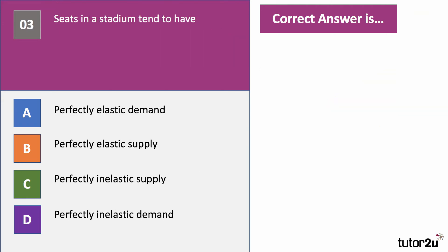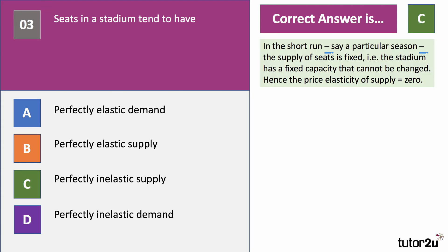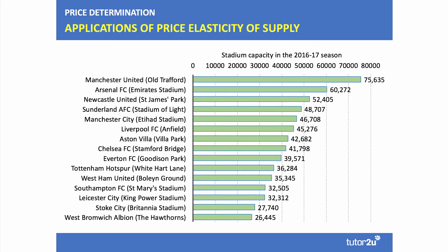Question three — I like this question. Seats in the stadium tend to have what? The correct answer is C: a perfectly inelastic supply. Consider a sports stadium — a football ground, for example. Take one particular season — essentially the capacity of the stadium is fixed, the supply of seats is fixed, can't be changed in any one season. Hence the price elasticity of supply is zero. Here's an example: stadium capacities for the English Premier League in 2016-17 were fixed. There is actually a big design fault in the Stadium of Light, the home of Sunderland AFC — all 48,707 seats face the pitch.